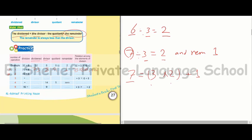Number 2: 42 divided by 6. The dividend equals 42, the divisor equals 6, the quotient equals 7. Here we have no remainder, so the remainder is 0. The relation: 42 equals 6 times 7 plus 0.